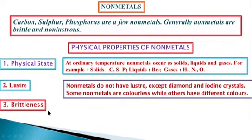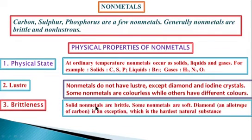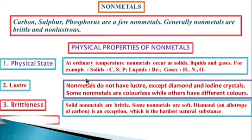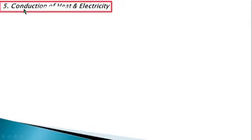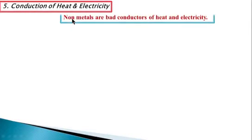Third, brittleness — solid nonmetals are brittle. Some nonmetals are soft. Diamond, an allotrope of carbon, is an exceptional nonmetal which is the hardest natural substance. Fourth, ductility and malleability — nonmetals are neither ductile nor malleable. Fifth, conduction of heat and electricity — nonmetals are bad conductors of heat and electricity.